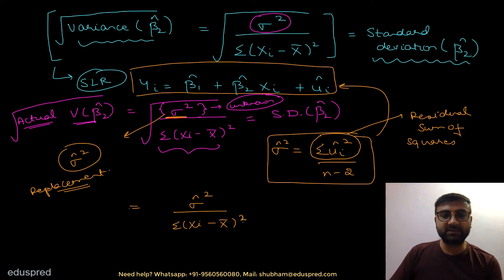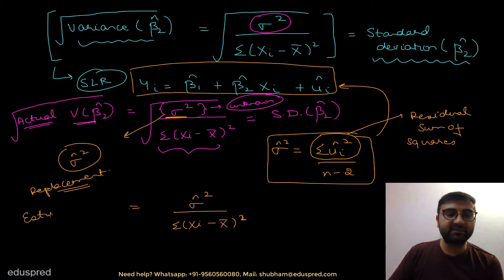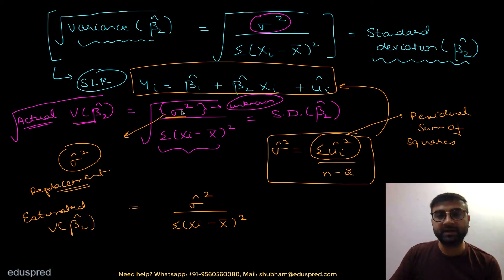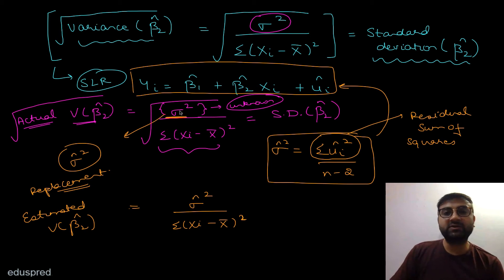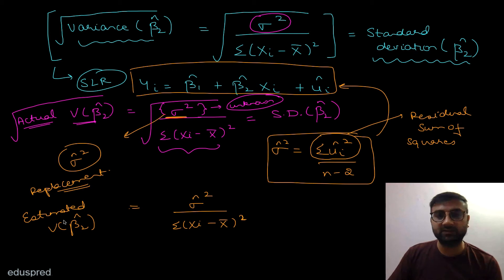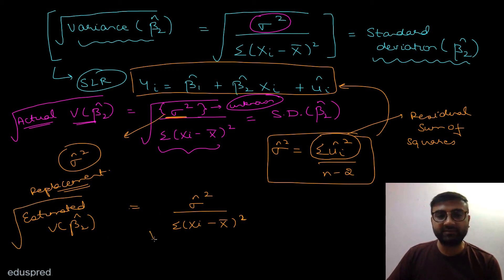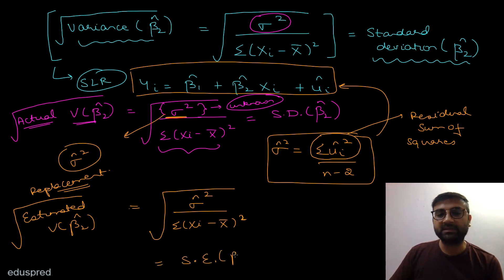This new expression is the one that we actually work with, but this is not your actual variance of beta 2 hat — think of it as the estimated variance of beta 2 hat. The actual variance of beta 2 hat depends on sigma square, which you never know, so you never get the actual variance — only the estimated variance. When you take the square root of the estimated variance of beta 2 hat, that expression is called the standard error of beta 2 hat.